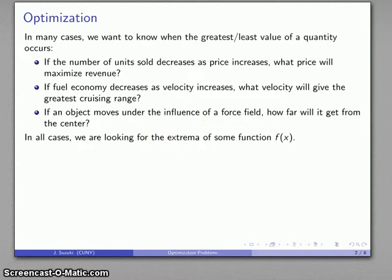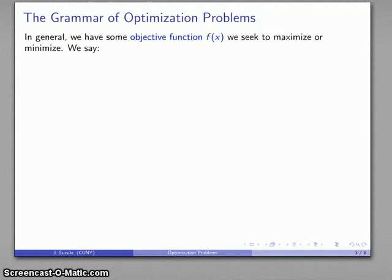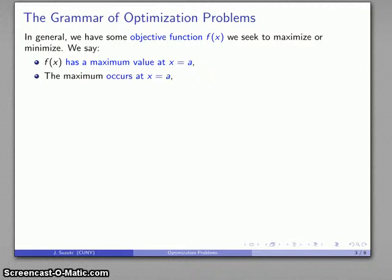Before we actually solve optimization problems, we have to talk about grammar and syntax — grammar and syntax is half the battle. In general, if we have some objective function that we're trying to maximize or minimize, we say the following: the function has a maximum value at x equals a; the maximum occurs at x equals a; the maximum value is equal to the function value.